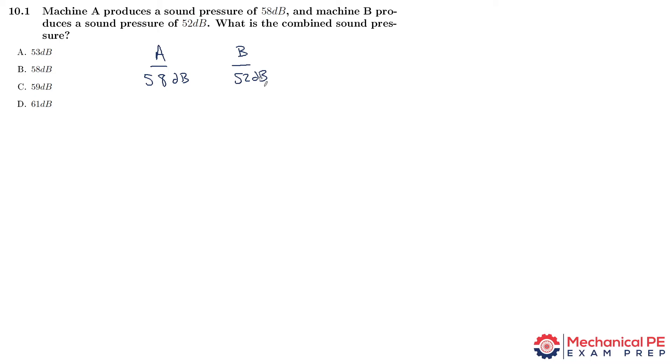Fortunately, there's a convenient shortcut. There's a table in the reference handbook which you can find by searching 'combining two sound levels.' In that table, we find out how much we should add depending on the difference between the two sources.